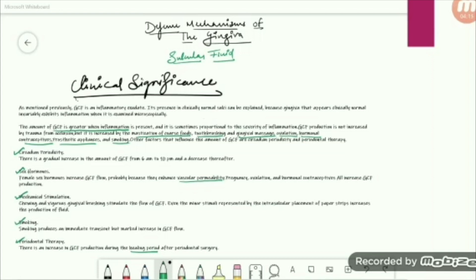Female sex hormones increase GCF flow and enhance vascular permeability. During pregnancy, ovulation, or under hormonal contraceptives, GCF flow will certainly increase. Mechanical stimulation by chewing or vigorous brushing also increases it. As noted, even placement of the paper strip increases fluid production. Smoking produces an immediate increase in GCF flow, and during the healing period after periodontal therapy or periodontal surgery, there will also be an increase in GCF.